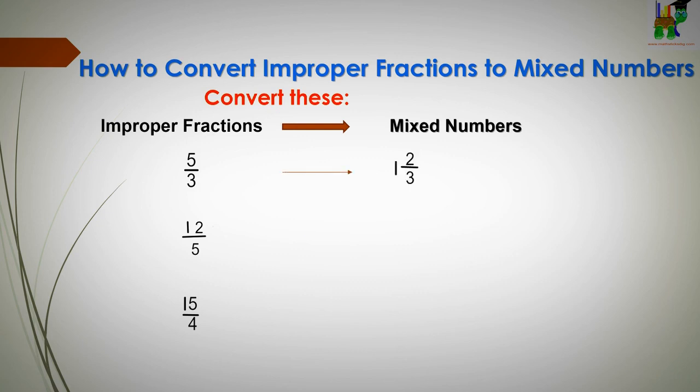And these are the answers. Five thirds is one and two thirds as a mixed number. Twelve fifths is two and two fifths and fifteen quarters is three and three quarters.